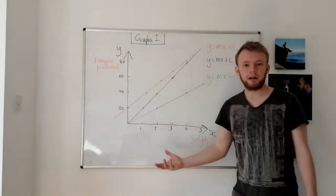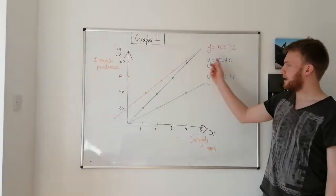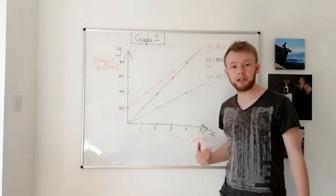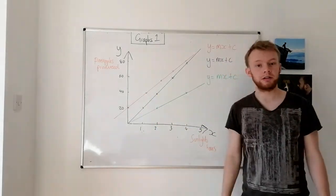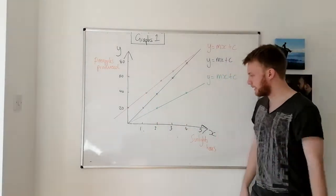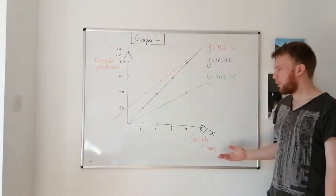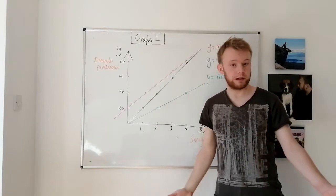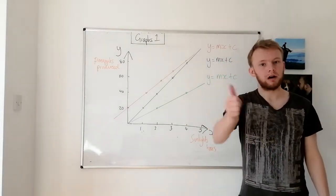You can see here I've got three different lines. I've got the red line, the blue line, and the green line. Now for one mark, just talking about how one changes as the other changes is good enough. So in my example here, as the number of sunlight hours increases, the number of pineapples produced also increases. So if you say that, you get a mark.